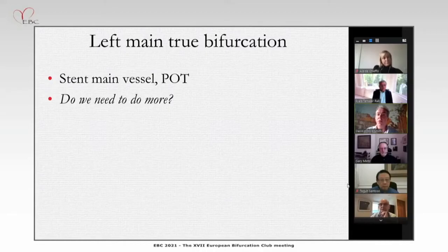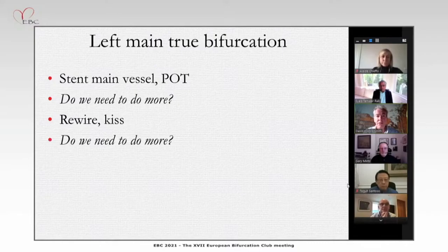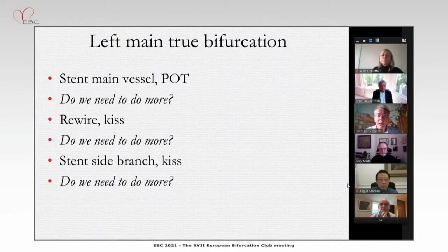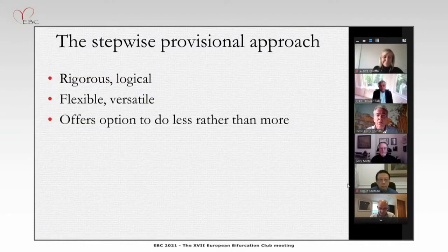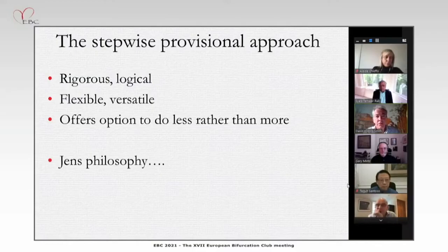For example, with a left main stem stenosis, you stent the main vessel, do proximal optimization, then ask how it looks — do we need to do more? If so, rewire the side branch and do a kissing inflation. At each stage you stop and assess: do we need to extend the side branch, do a kiss, perhaps a re-POT? As Jens Lassen likes to say: if you start with one stent you can always end up with two, but if you start with two stents you can't end up with one.